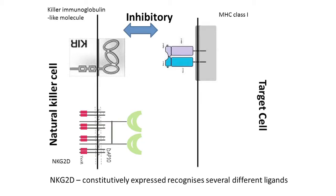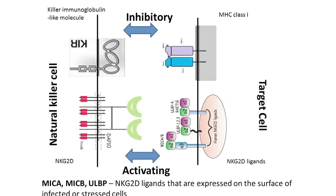The third molecule is called NKG2D. This is also expressed constitutively on all killer cells, along with the KIRs. They recognize a series of different ligands, which are expressed on the surface of a target cell when that cell becomes stressed — whether virally infected, when it becomes a tumor cell, or when it gets stimulated in an inappropriate way. While the KIR interaction is inhibitory, the NKG2D interaction leads to activation of the killing cell, and it will attempt to kill the target cell.